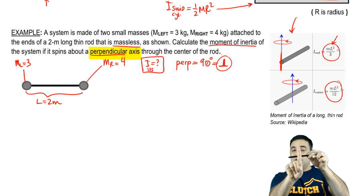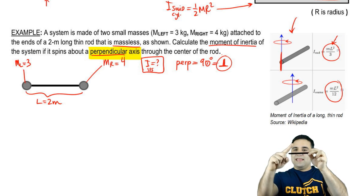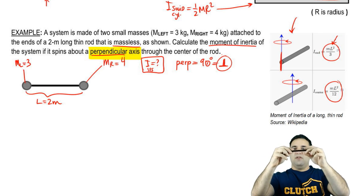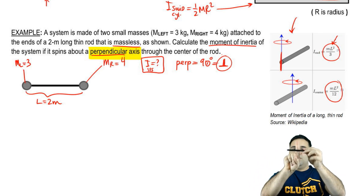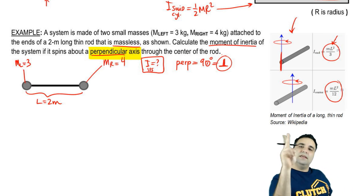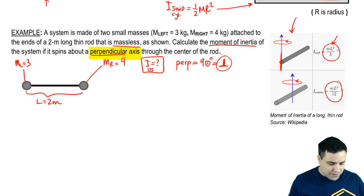You could have a perpendicular axis, or you can have a parallel axis. Parallel axis would look like this. It would go with the rod, but then the rod is just spinning around itself, and that doesn't do anything. So the axis will be like this through the middle, which means the rod is spinning around itself like this. So it's a very visual chapter, a very visual topic.